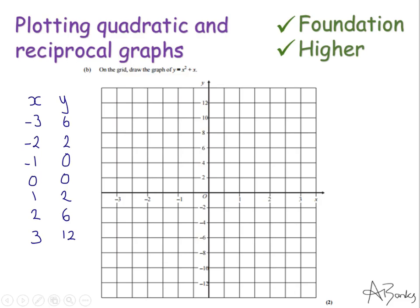So the first one I have is x is minus 3, y is 6. So on my grid that's going to be minus 3, 6. So that's the coordinate I'm going to plot. Then I've got minus 2, 2. I've got minus 1, 0. 0, 0. 1, 2. 2, 6. And 3, 12. So I'm going to plot them points on my coordinate grid now.